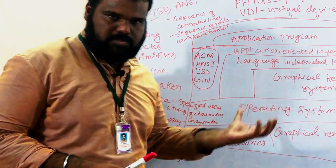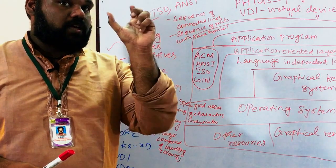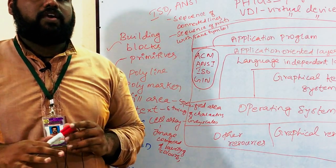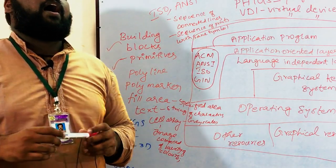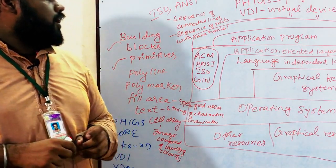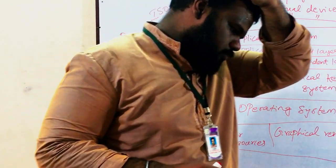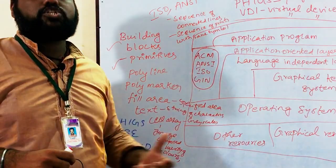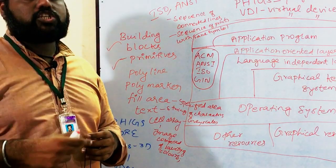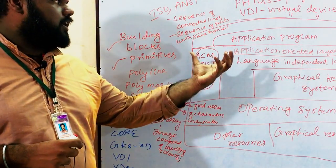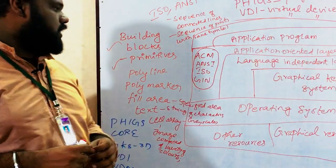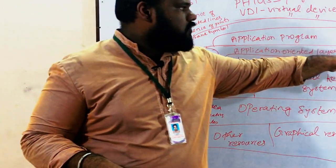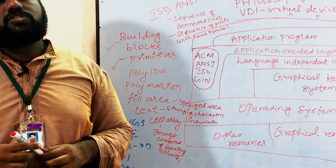Now returning to Graphic Kernel System — it is the first proposed graphical system, proposed by ISO and ANSI. It is a set of functions for the production or manipulation of images, defining what a CAD drawing should be.